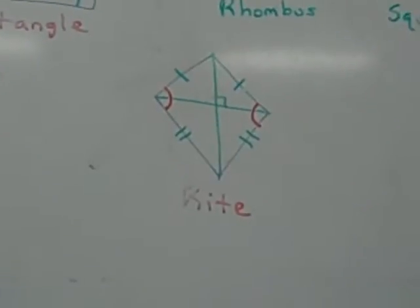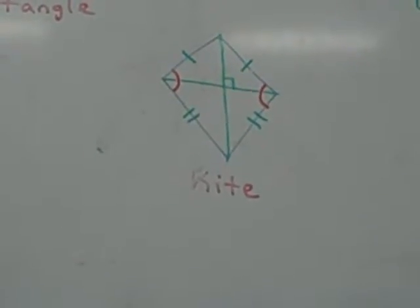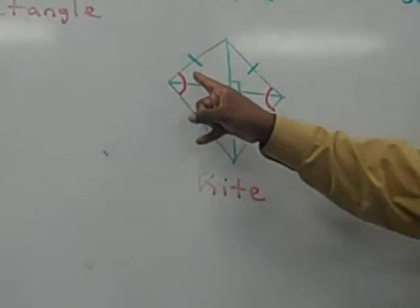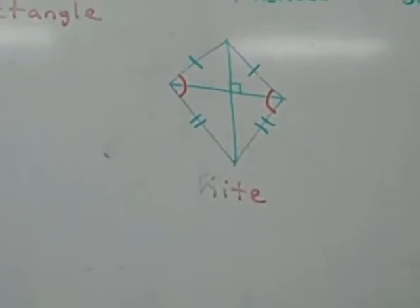Is a kite a parallelogram? No, it is not. Because, again, this side and this side are not congruent, this side and this side are not congruent, so they're not parallel.